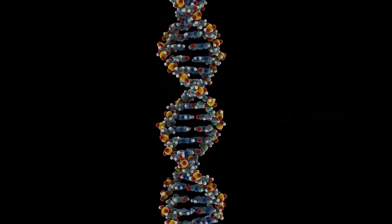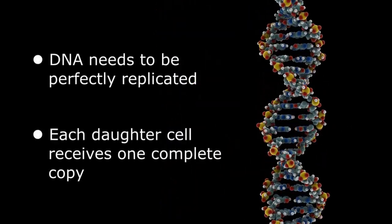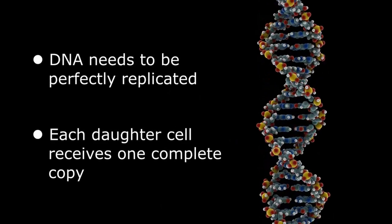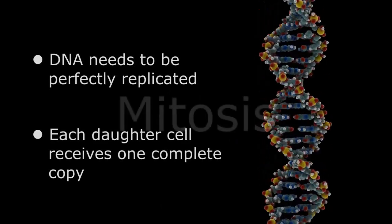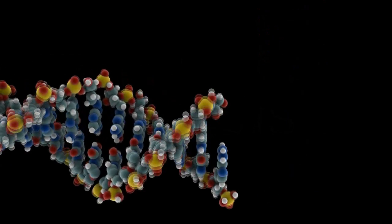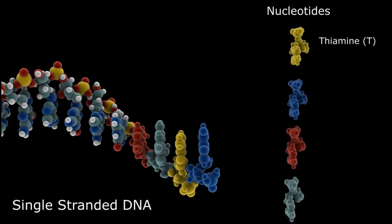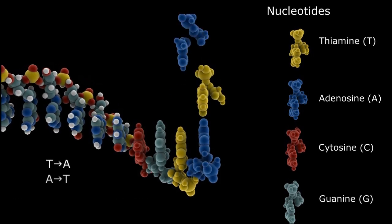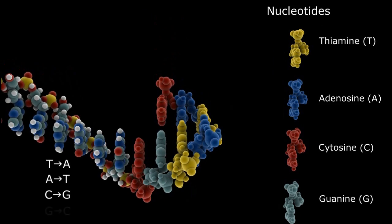During division, this DNA needs to be perfectly replicated, with each daughter cell receiving an identical copy to carry out its assigned function. This is done through the process of mitosis, where the helical strand is unwound and each strand duplicated by pairing each of the four nucleotides — labeled T, A, C, and G — with its complementary base, linking T to A, A to T, C to G, and G to C.